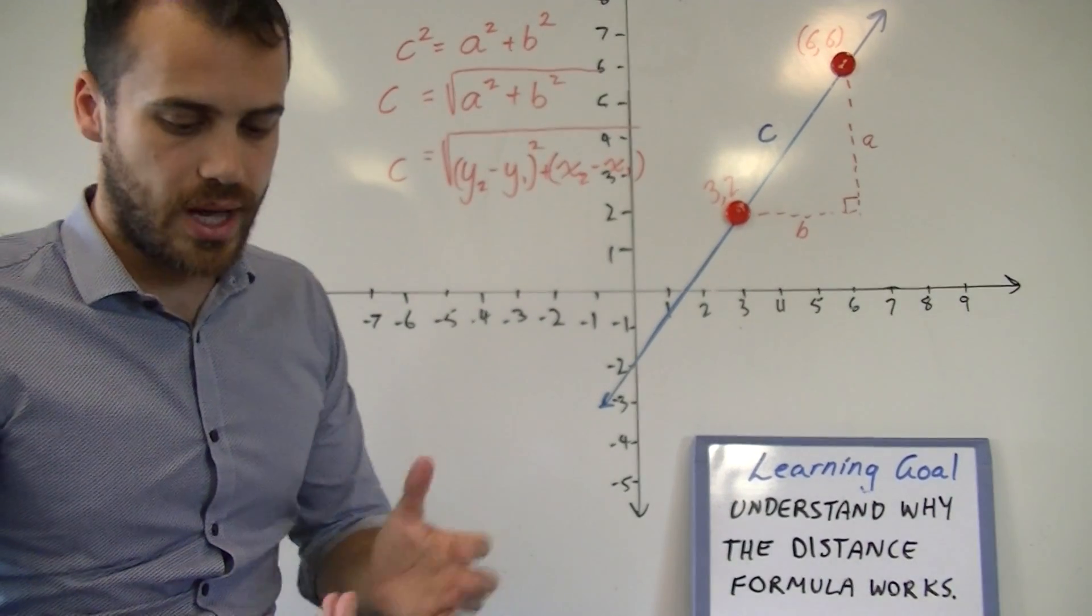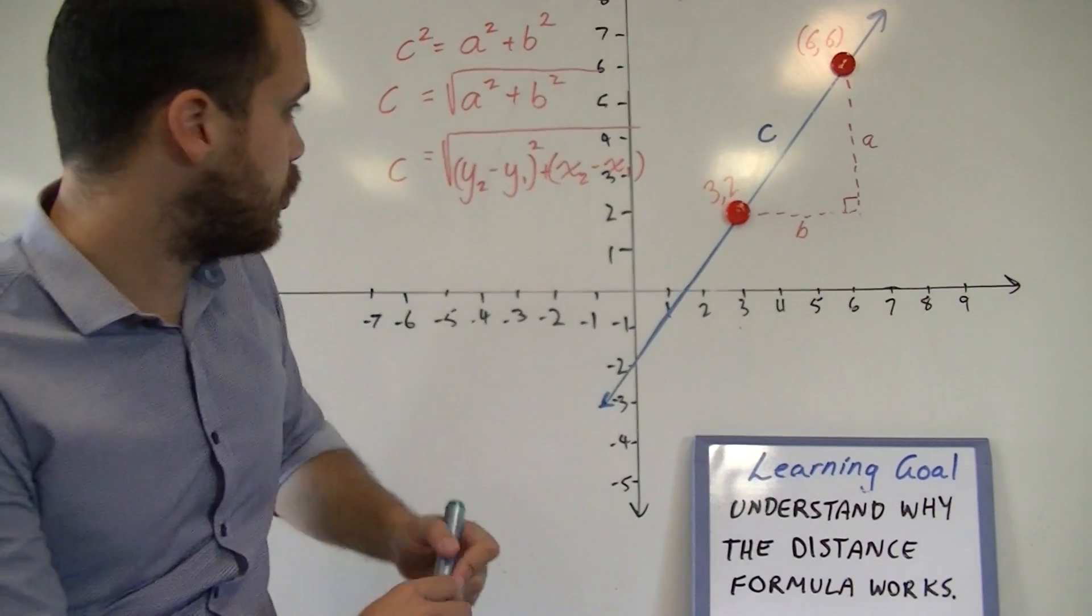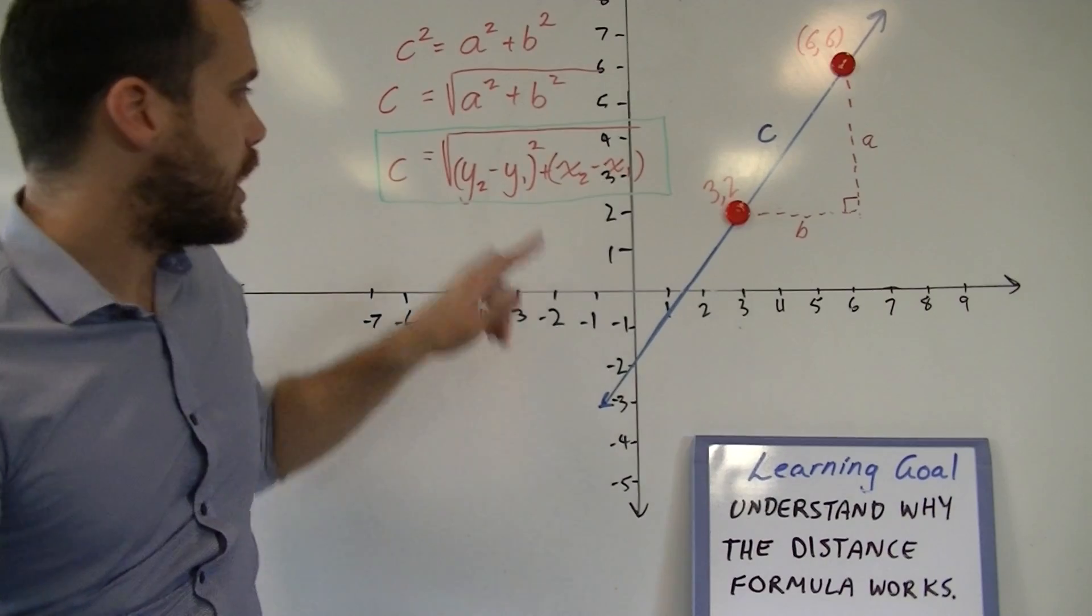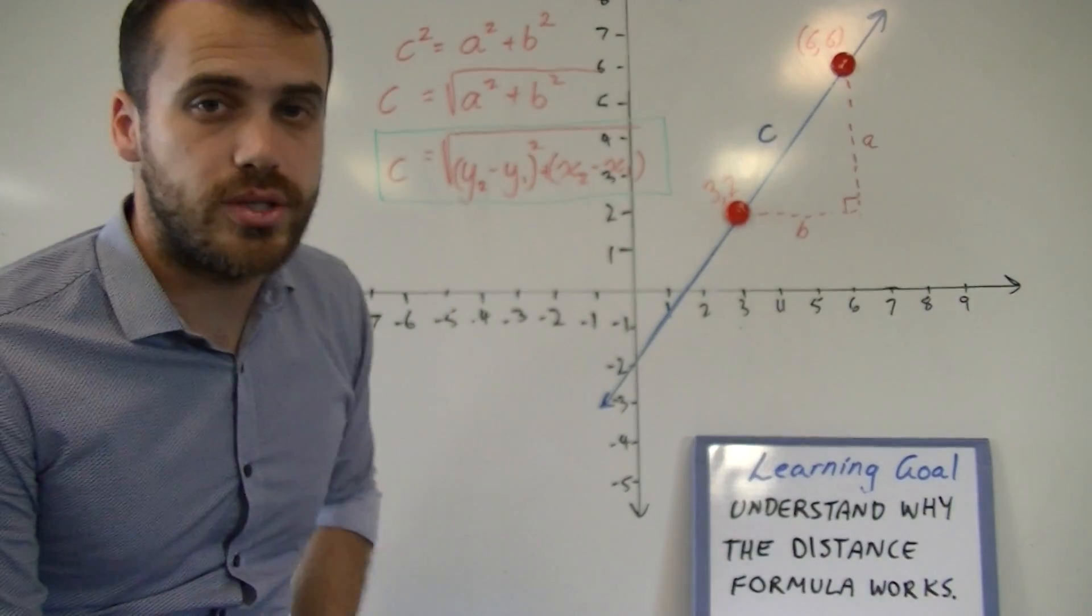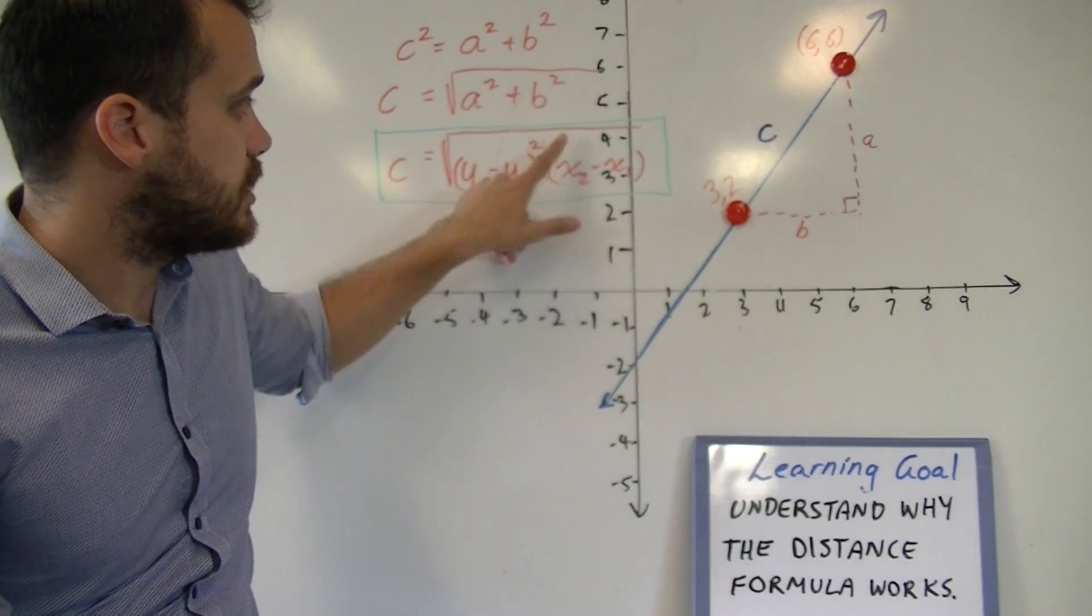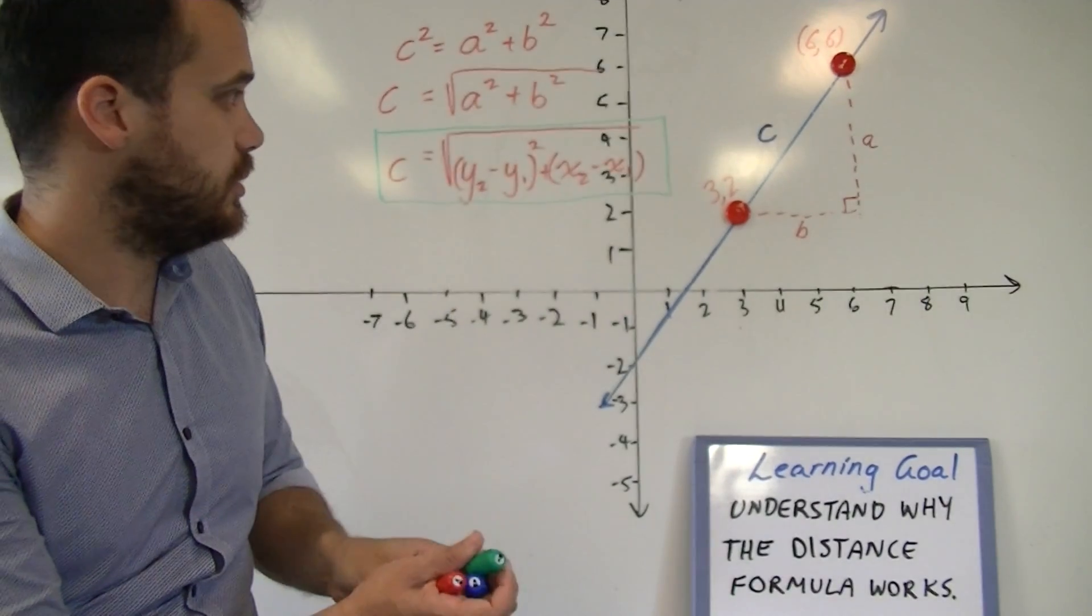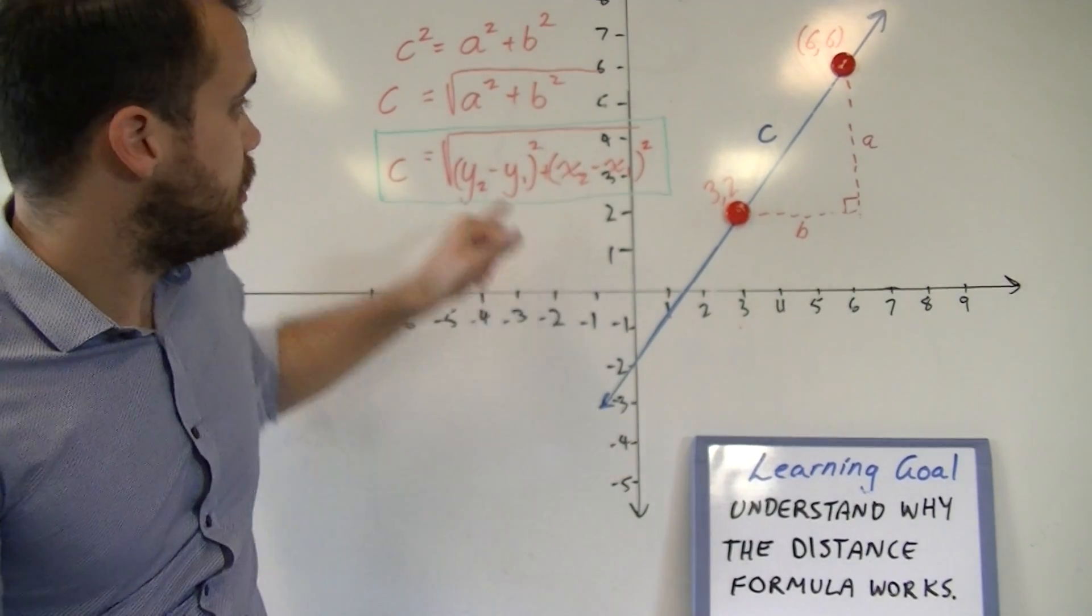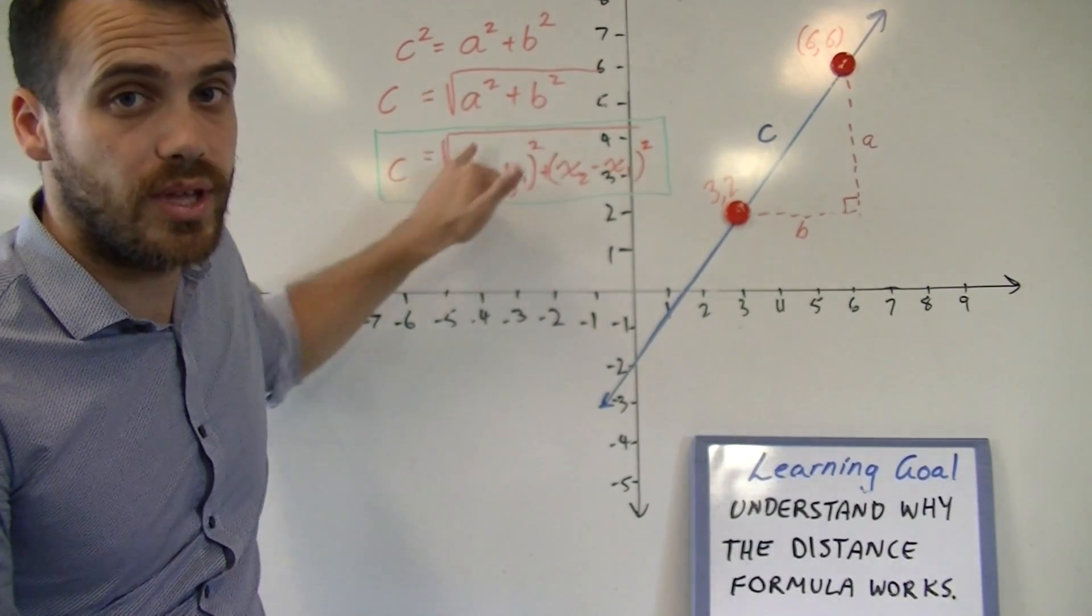What we have here now is our distance formula. Our distance formula is Y2 minus Y1 squared plus X2 minus X1 squared. And then don't forget that square root at the top of all of that.